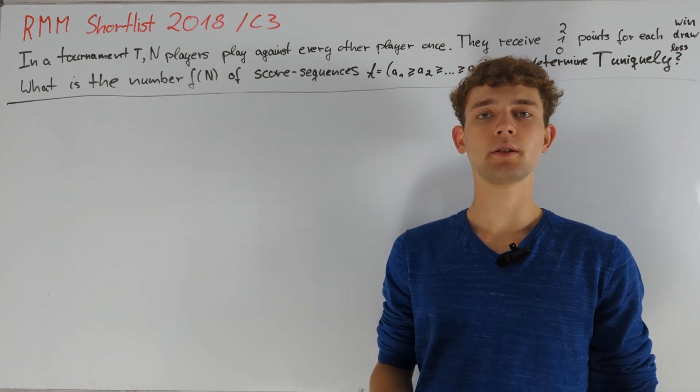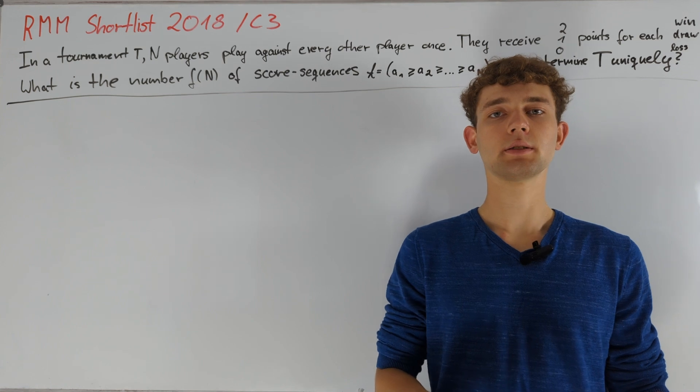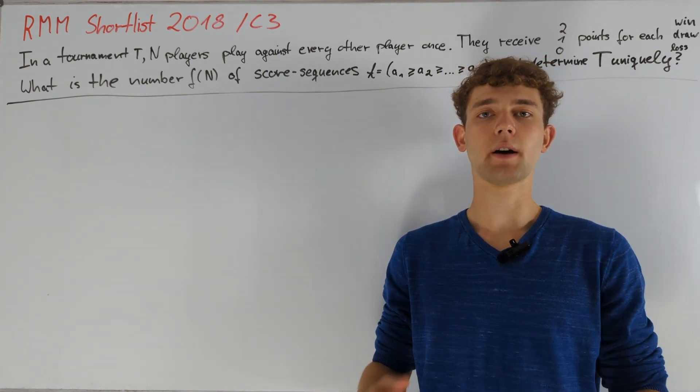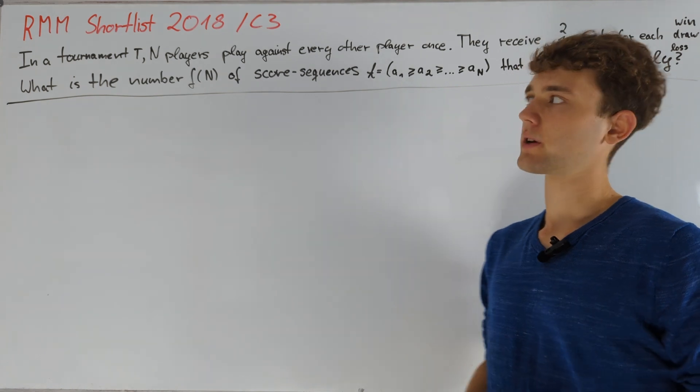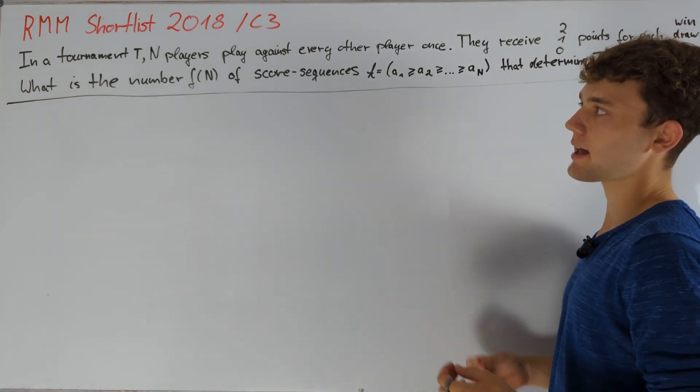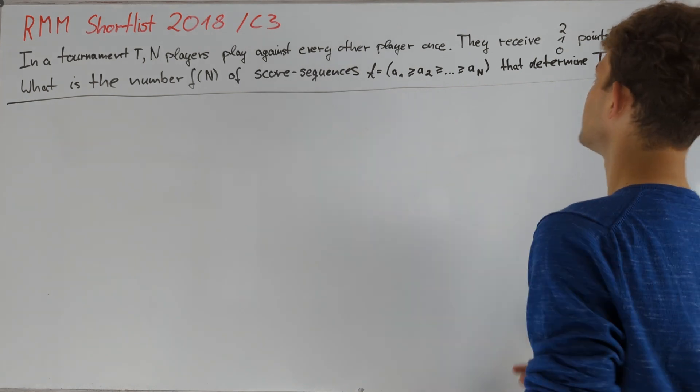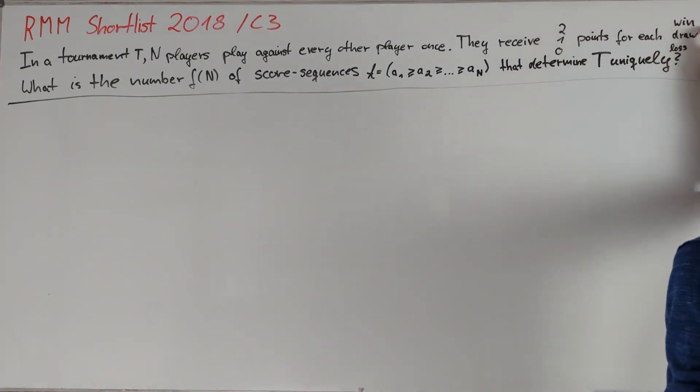This problem is concerned with characterizing the tournaments where you can read off the outcomes of all games based on just the final score sheet. More precisely, we consider a tournament T where n players play against every other player exactly once. They receive two points for each win, one point for a draw, and of course zero if they lose.